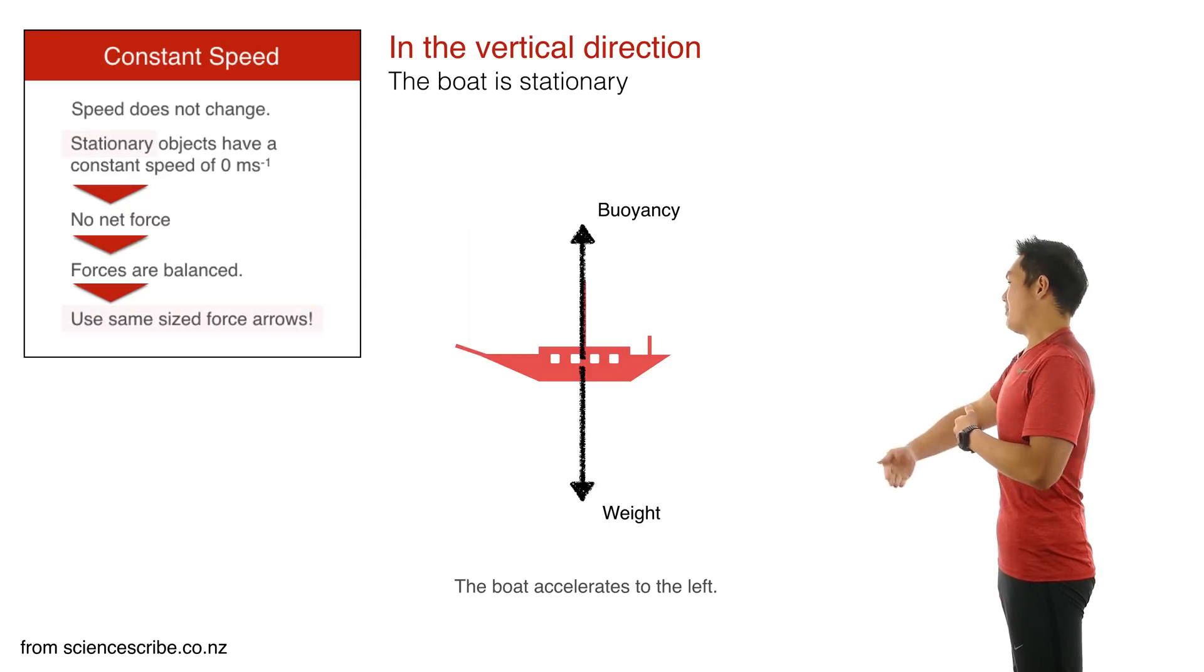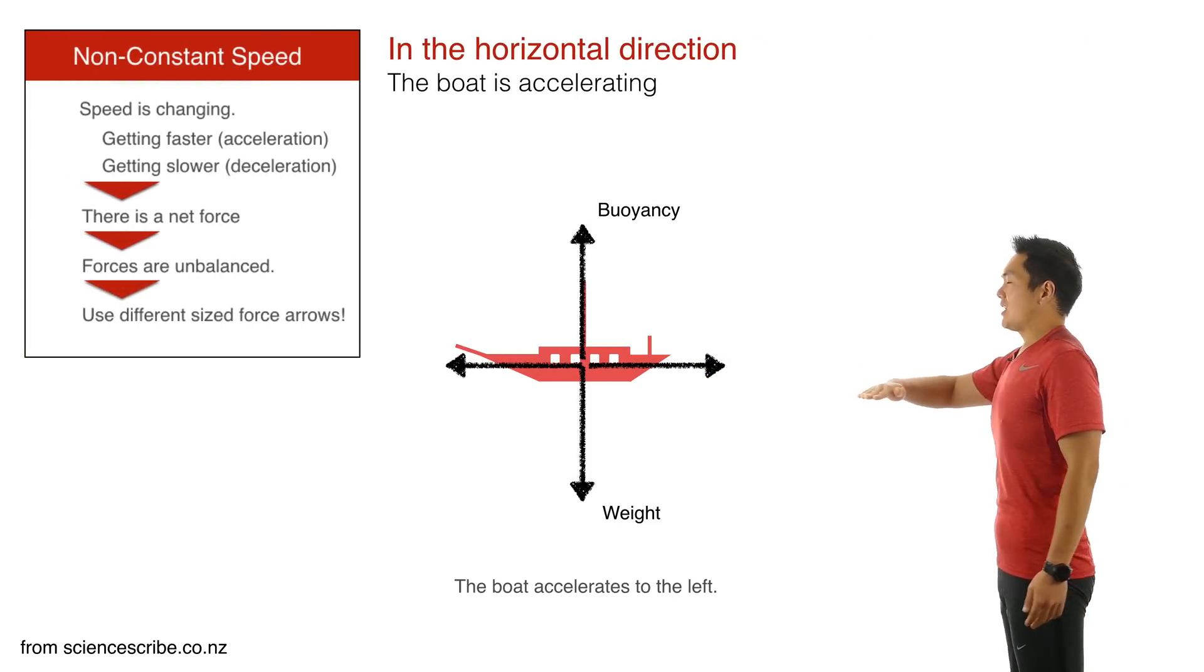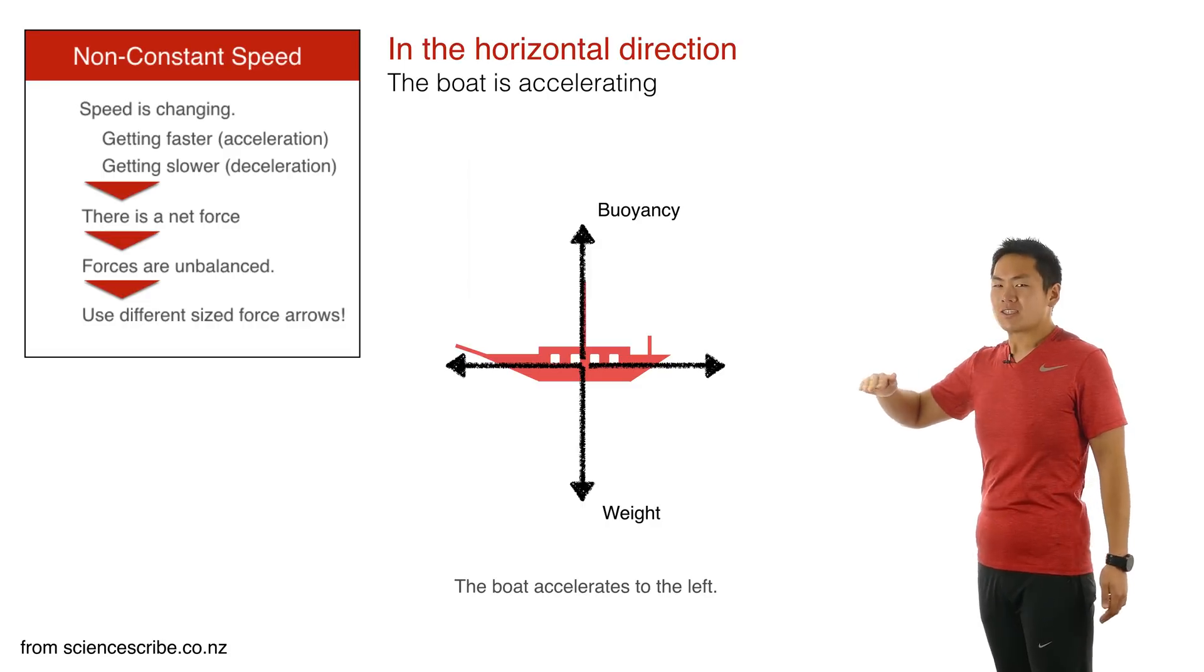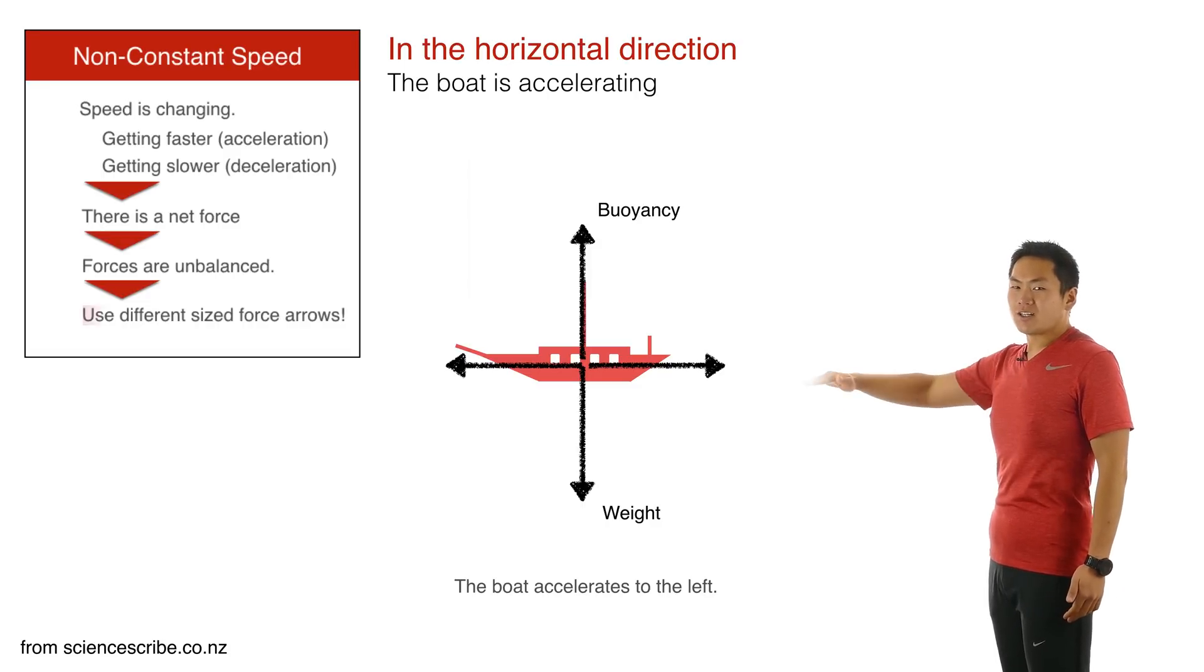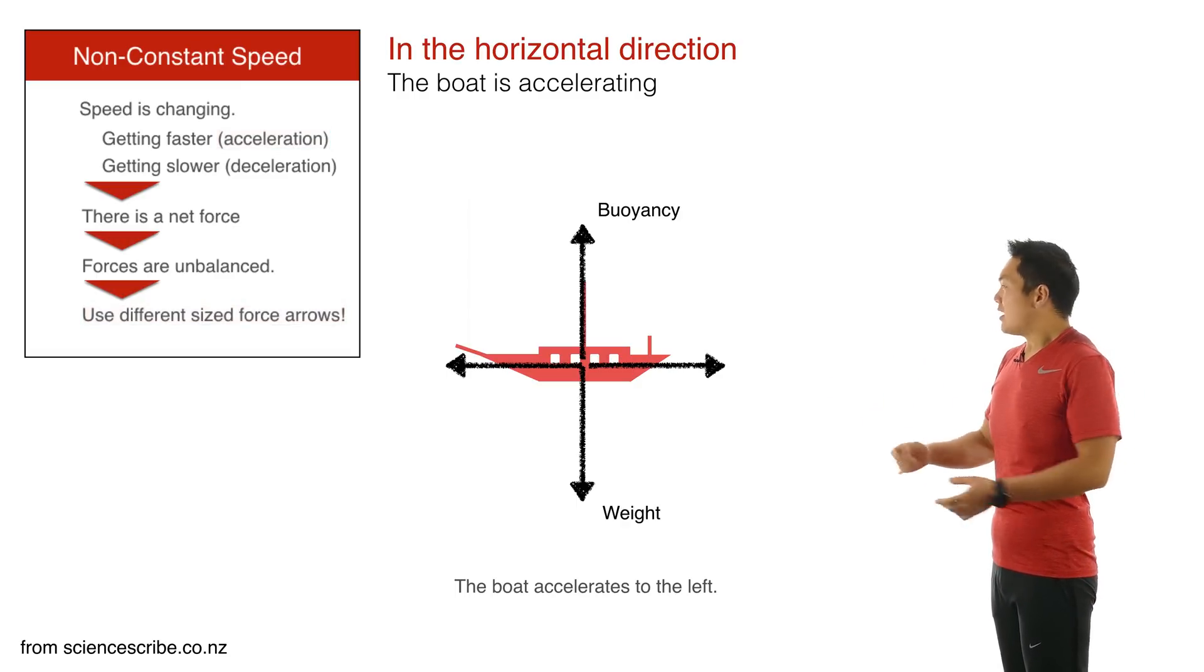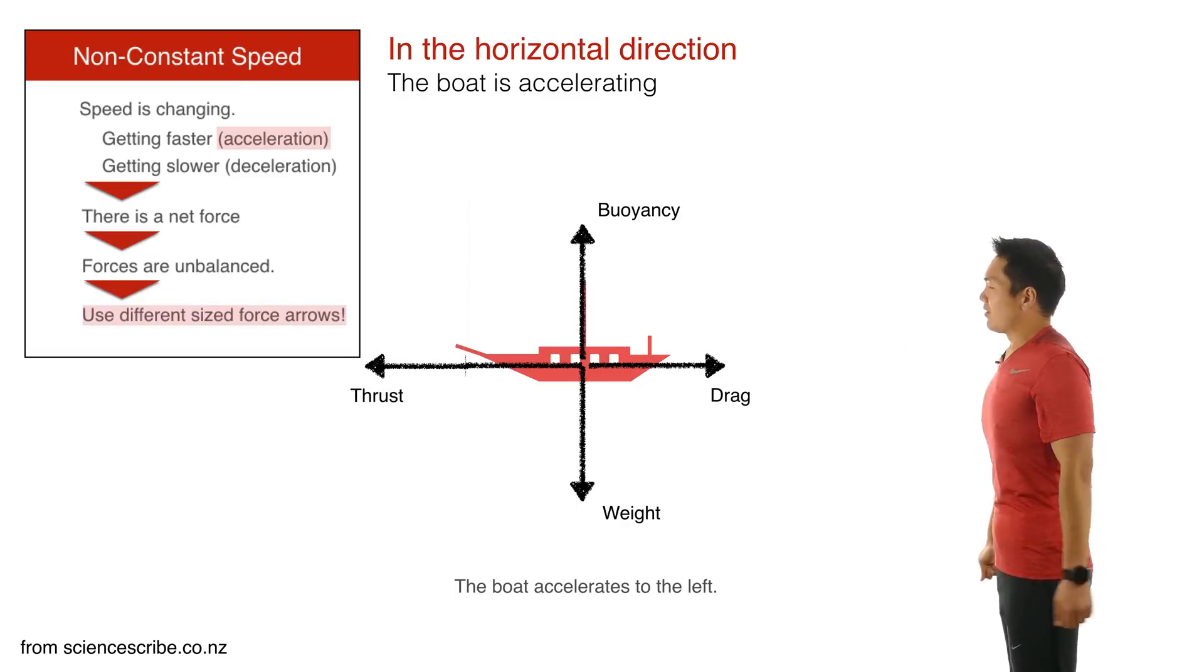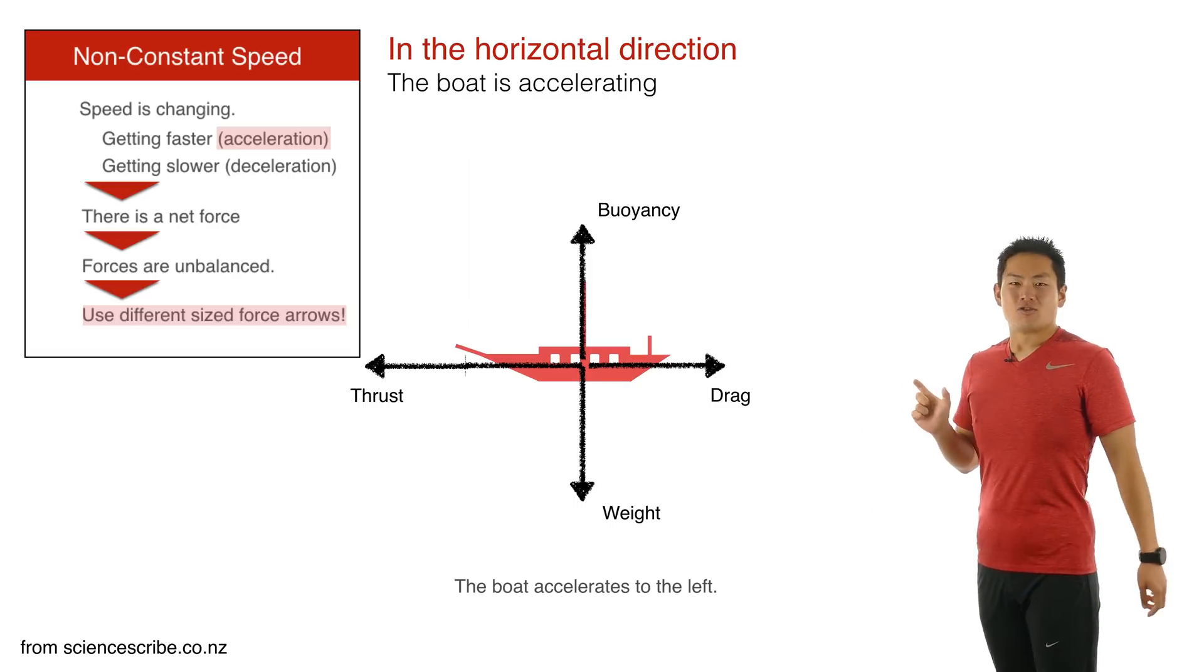So I use the same sized arrows in the vertical direction. I then think about the horizontal direction, where I've said that the boat is accelerating forwards. In the horizontal direction, because it is accelerating forwards, that means that there is a net force. The forces are unbalanced. And I show that using different sized arrows. And since it is accelerating, I'm putting thrust as larger than drag.